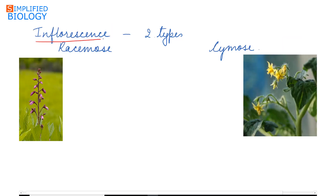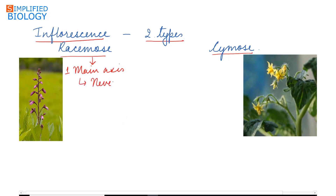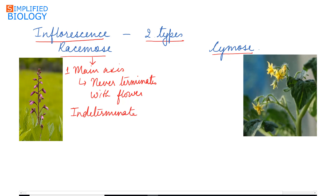Inflorescence can be broadly divided into two types: racemose and cymose. In the case of racemose inflorescence, the main axis of the stem has indefinite or indeterminate growth.